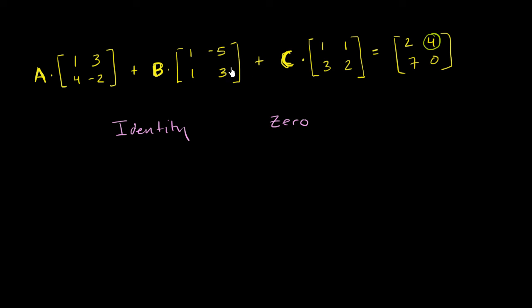So let's think about other combinations here. What about B and C being the identity matrices, and A being the zero matrix? In that situation, A is the zero matrix, so that's not going to matter. When you multiply B times this, you're just going to get this matrix, and C times this, you're going to get that matrix, if B and C are identity matrices. And so you have negative five plus one would be negative four. So that doesn't work either.